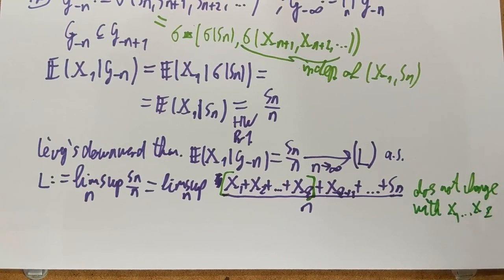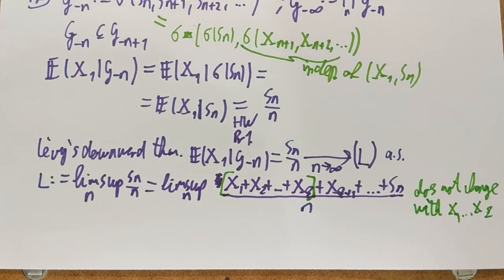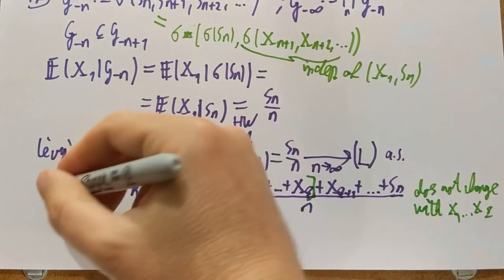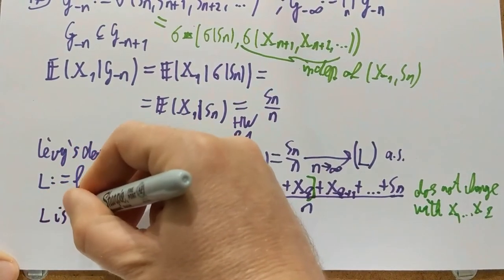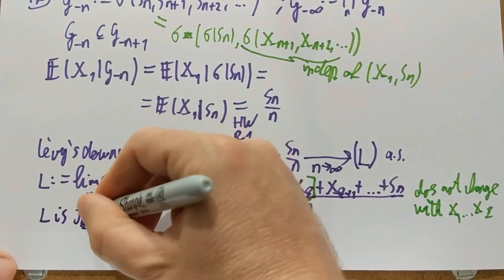So this thing does not change with X_1 through X_K. If I replace X_1 through X_K, the lim sup will not notice that. That means that was exactly the definition of this tail sigma algebra tau_k. So that means that L is tau_k measurable. This was this tail sigma algebra.